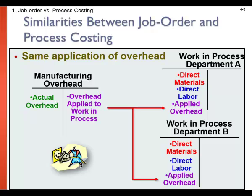Overhead is applied in process costing just like we applied overhead in job order costing. We use one predetermined overhead rate to apply overhead based on an allocation base, like direct labor cost or direct labor hours. The manufacturing overhead clearing account is credited when we actually apply the overhead, and then we put that overhead into our work in process accounts.